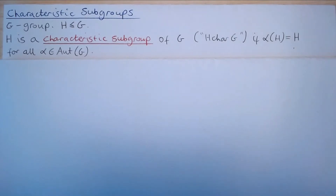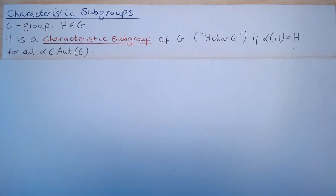Welcome to this third part in a series on characteristic subgroups. In this video we will show that the Frattini subgroup of a group is characteristic in the group. We will also show that if G is a finite group and P is a Sylow P-subgroup of G that is normal, then P is characteristic in G.